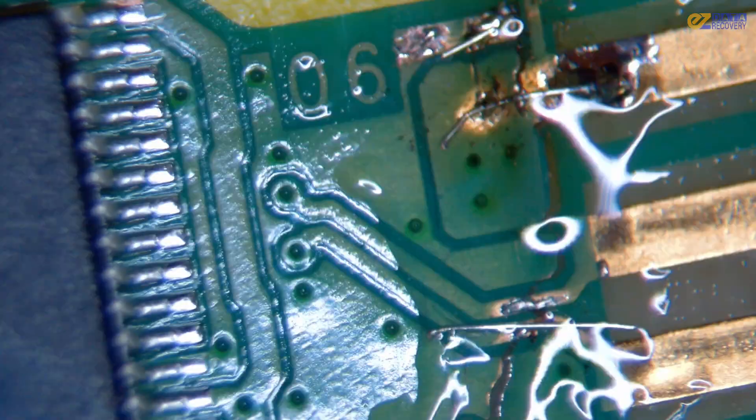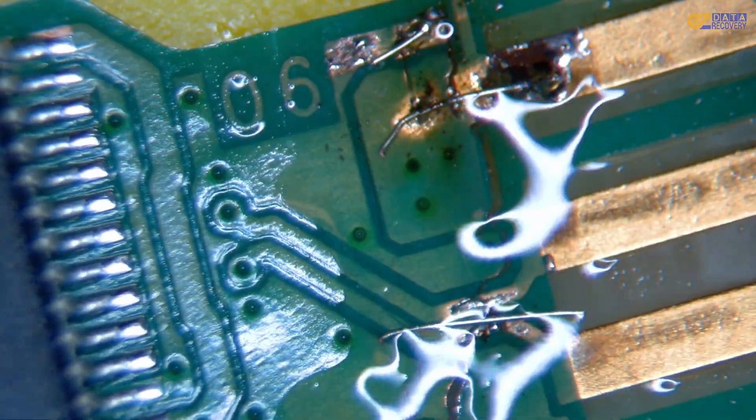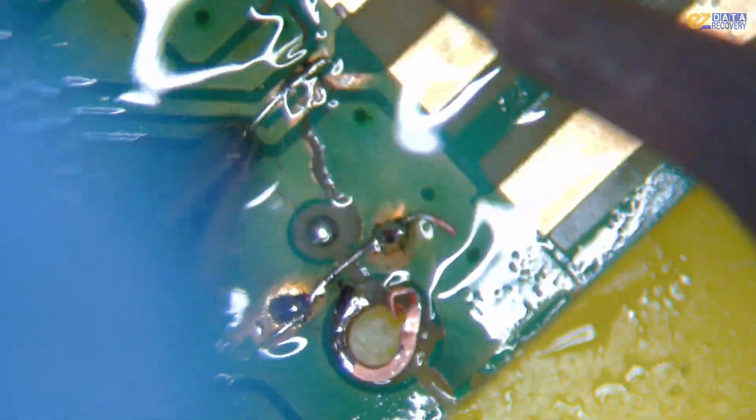And you can see these are the actual wires we're using here. These are very tiny. If you can imagine, this is all being done under a microscope. So these are very tiny wires, and we have to use special tools just to manipulate them.